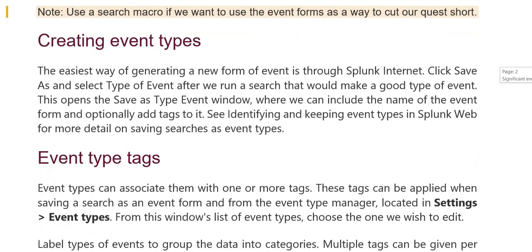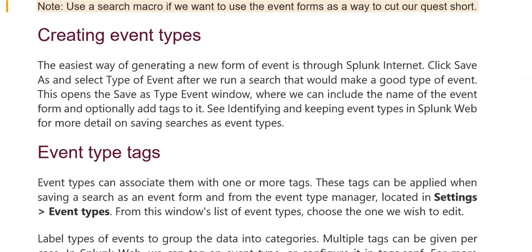Creating event types: the easiest way to generate a new type for an event through Splunk web is to click 'Save As' and select event type, after we run a search that would make a good type of event.